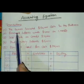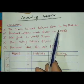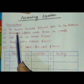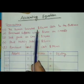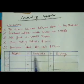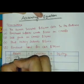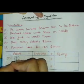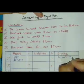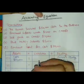The first transaction: the owner invested fifty thousand dollars cash in the business. As you can see, there is an inflow of fifty thousand dollars cash in the form of owner's equity. This will increase cash on the asset side by fifty thousand dollars, and owner's equity will also increase by fifty thousand dollars. There is no effect on liabilities.